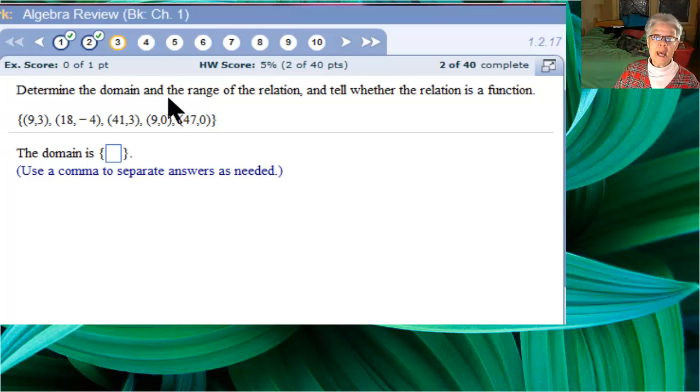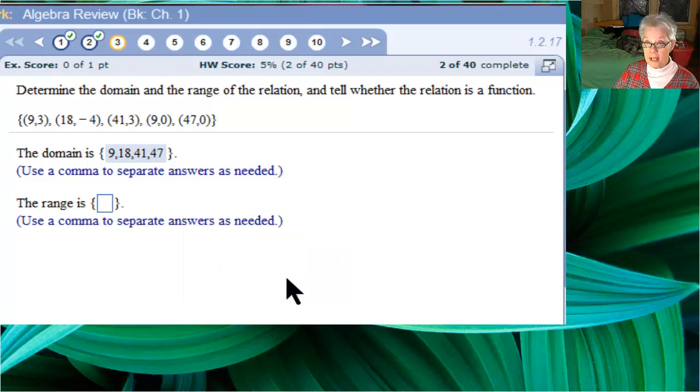Remember domain. Let's review domain. The fundamental definitions of domain and range are these. The domain consists of the set of all the x-coordinates without repetition. So, let's list them here. Each x-coordinate, 9, 18, 41, another 9, but I don't have to list it again, and 47. That's the domain of our function that consists of one, two, three, four, five points.